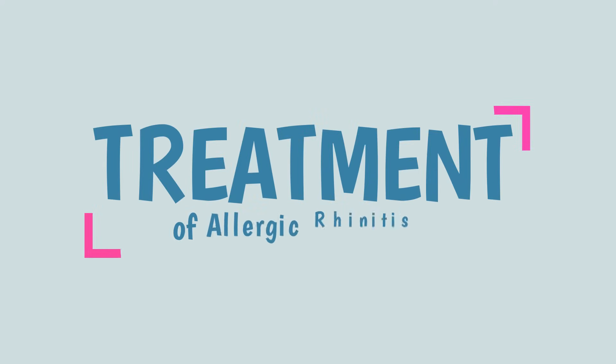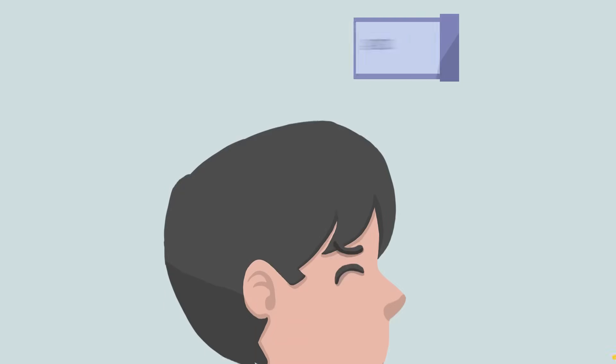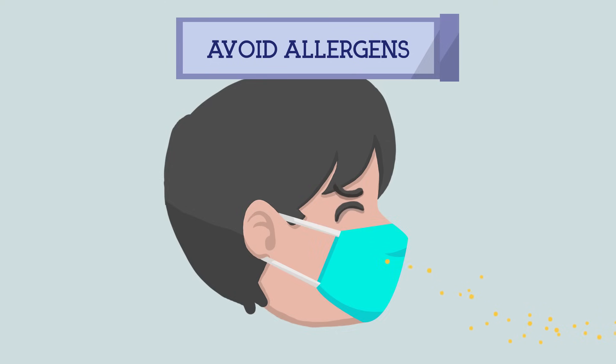Treatment of allergic rhinitis is achieved by targeting different steps in the allergy pathway. 1. Avoid allergens. This can be done by taking precautionary measures to avoid exposure, for example, wearing face masks during pollen season.